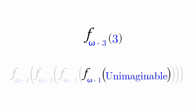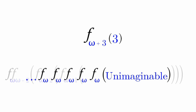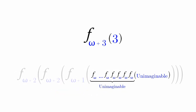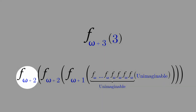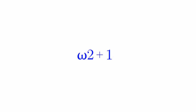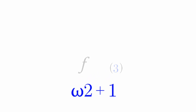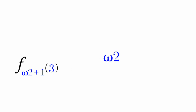Now, F(omega+1) of 3 breaks down just like before: we do F(omega) of F(omega) of F(omega)... an unimaginable number of times. Then you put it back into the parenthesis and do F(omega+1) of F(omega+1). That's the omega times 2 process, done 3 times.